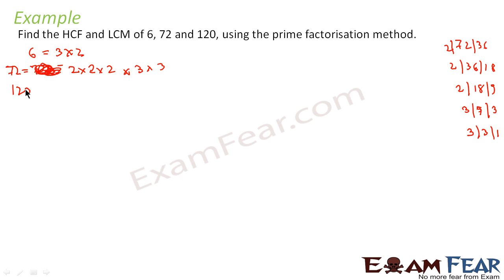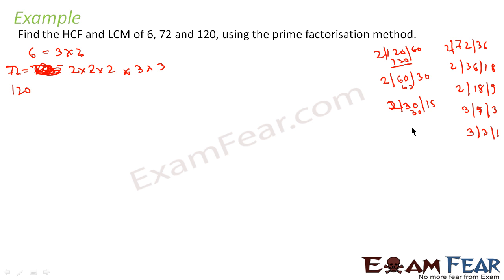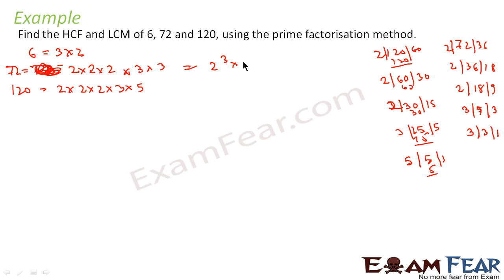Similarly for 120: 120 divided by 2 is 60, divided by 2 is 30, divided by 2 is 15, divided by 3 is 5, divided by 5 is 1. So 120 = 2 into 2 into 2 into 3 into 5, which is 2 cubed into 3 into 5. To keep things consistent, we can write 72 = 2 cubed into 3 squared into 5 to the power 0, noting that 5 to the power 0 is just 1.